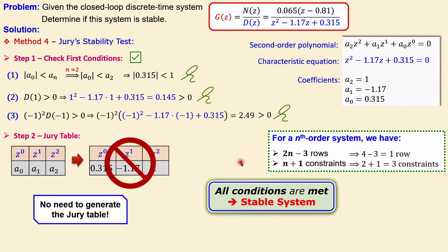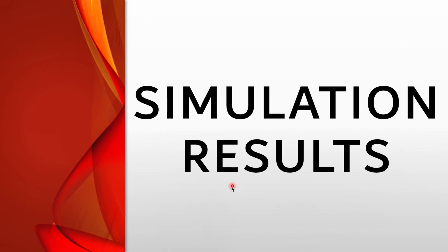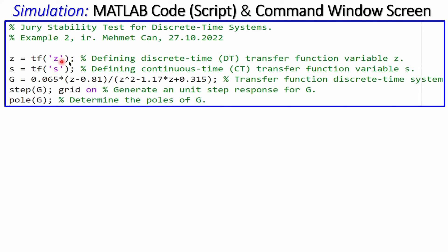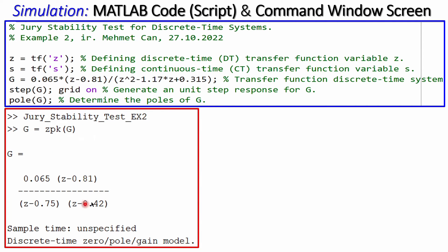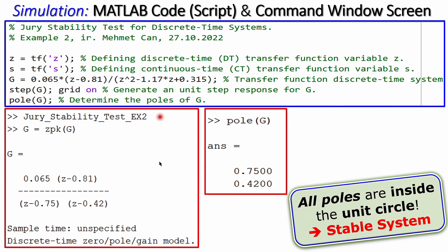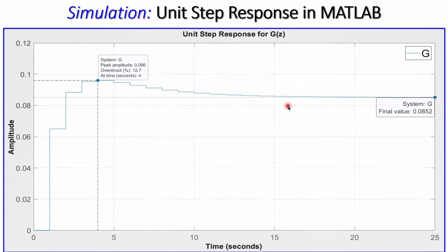Now let's look at the MATLAB simulation to confirm our calculations. The script defines the z variable, the transfer function G(z), uses step(G) to generate the unit step response, and pole(G) to determine the poles. Running the script gives poles at 0.75 and 0.42, exactly matching our hand calculations. All poles are inside the unit circle — stable system.